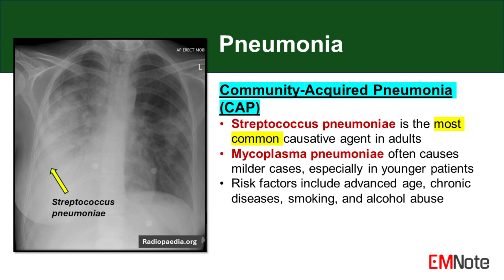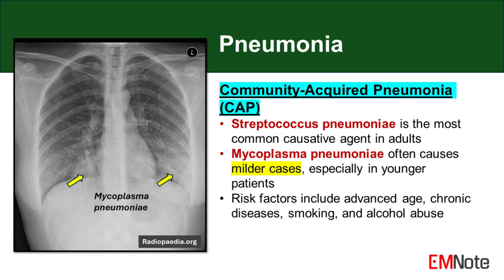The most prevalent causative agent in CAP is Streptococcus pneumoniae, also known as pneumococcus. This gram-positive encapsulated diplococcus is responsible for a significant number of cases, particularly in adult populations. Mycoplasma pneumoniae, an atypical bacterium lacking a cell wall, is another common pathogen in CAP.